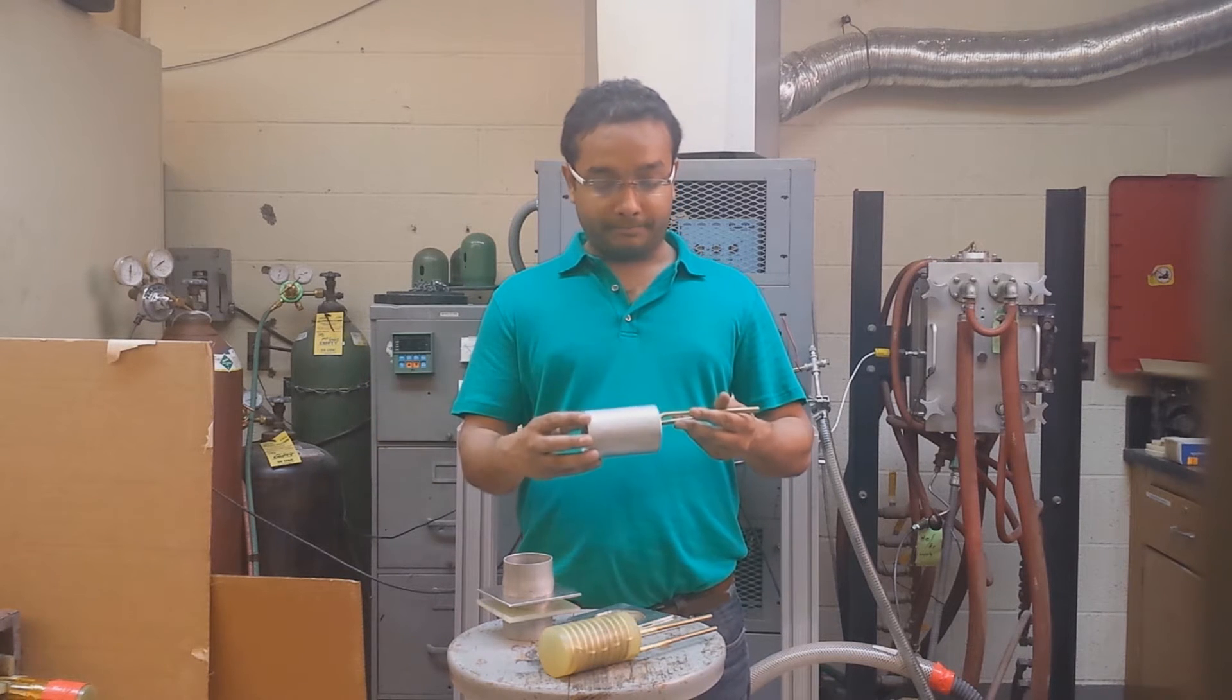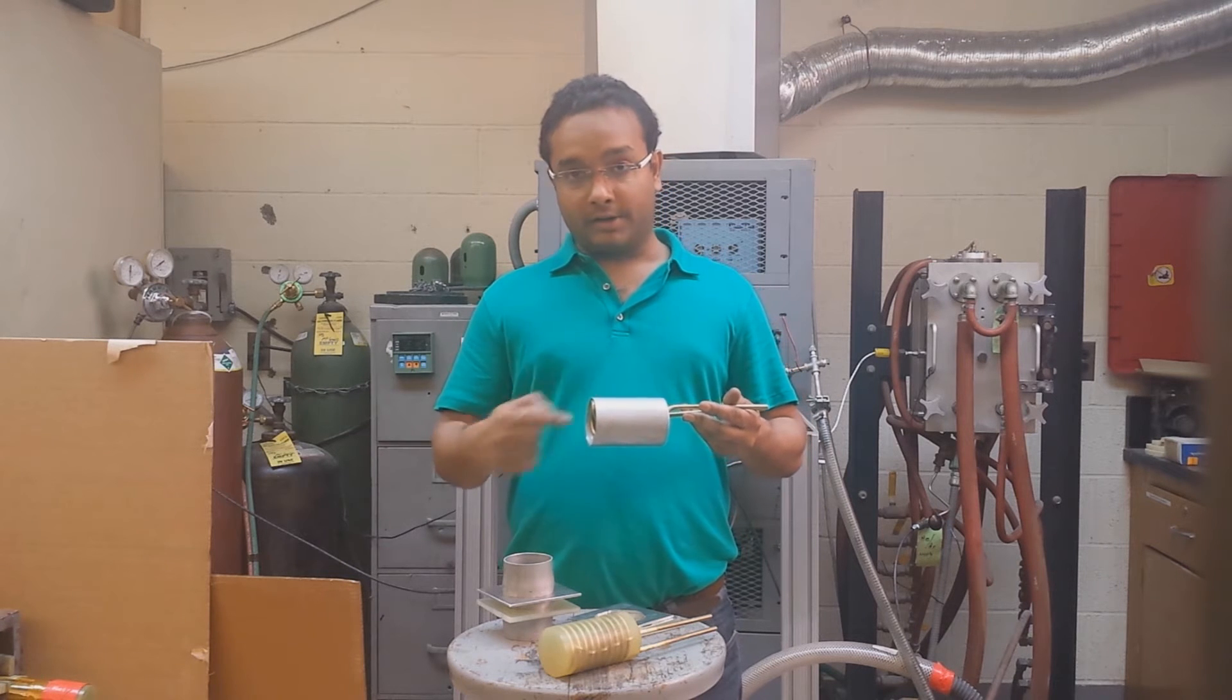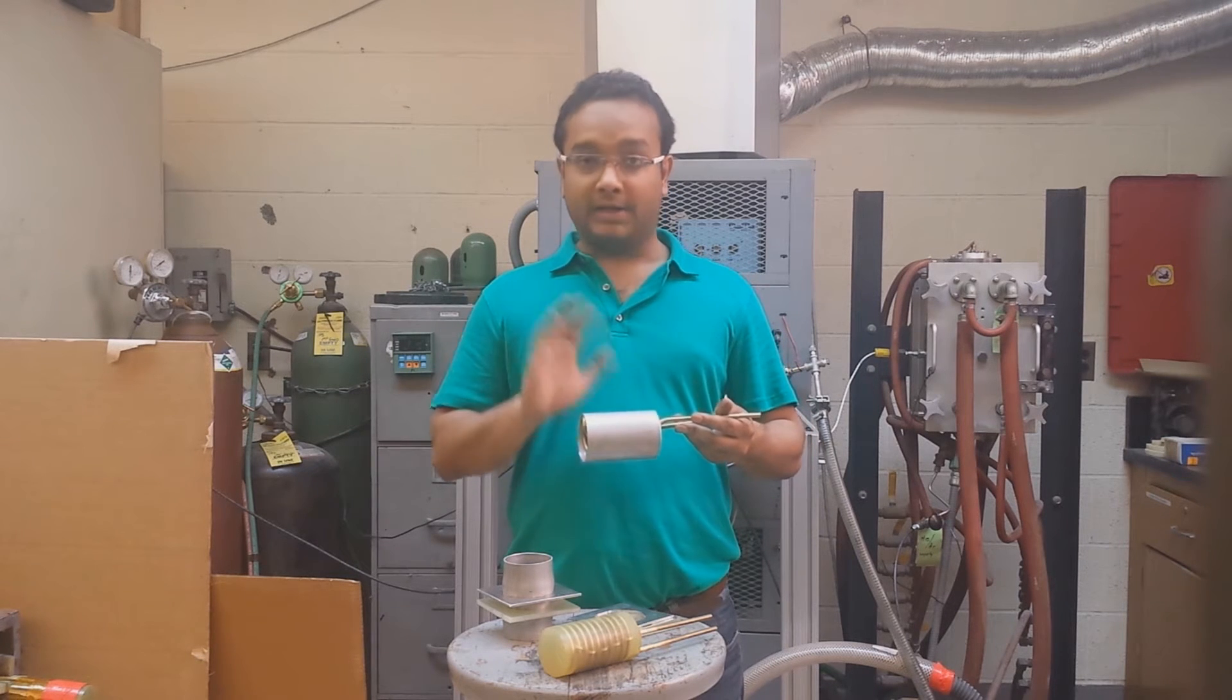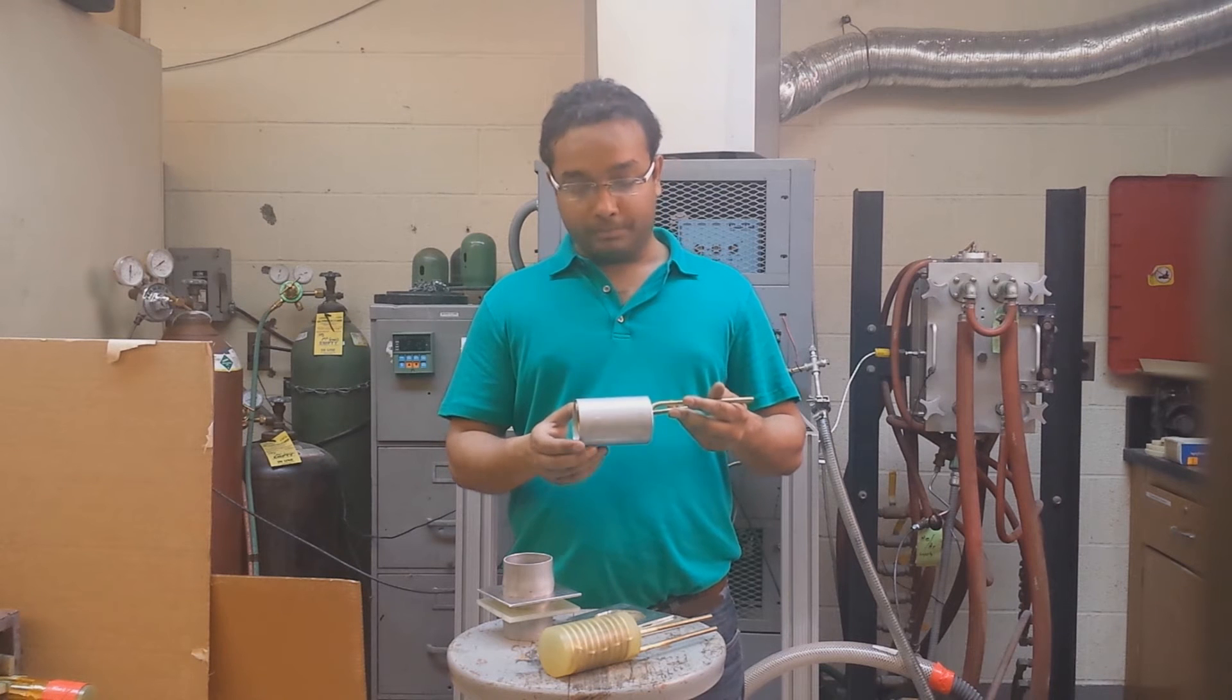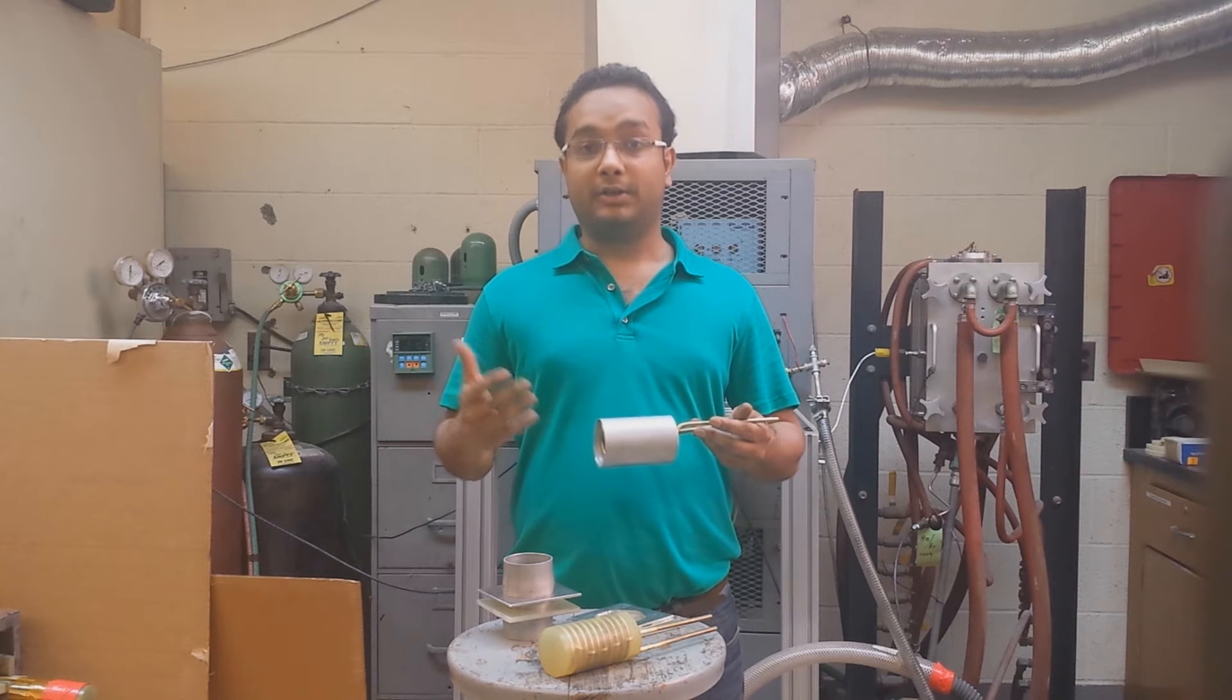We place the tube around the coil, and passage of a capacitor bank driven current through the coil induces a reverse current in the aluminum tube. Now because the currents are opposite in nature, the coil and the tube repel each other.